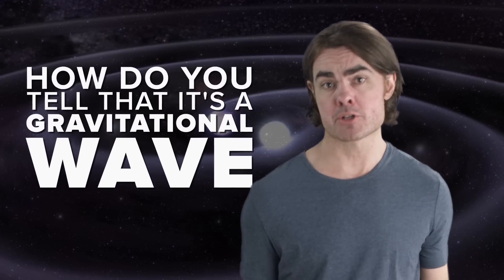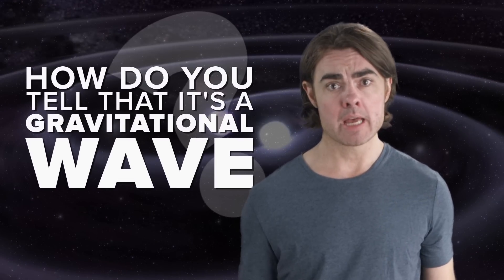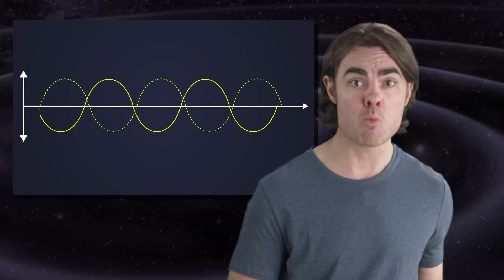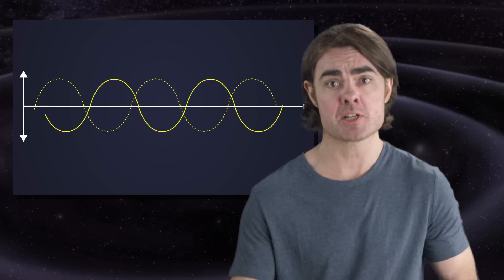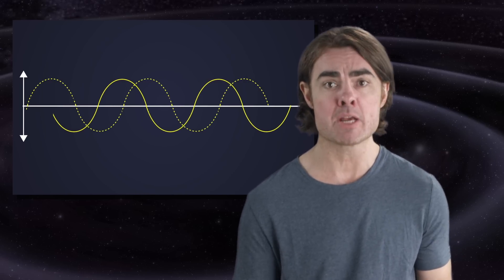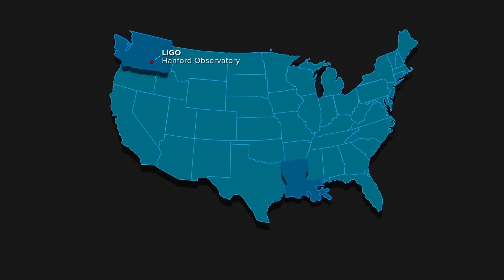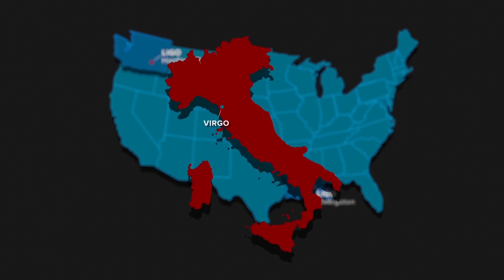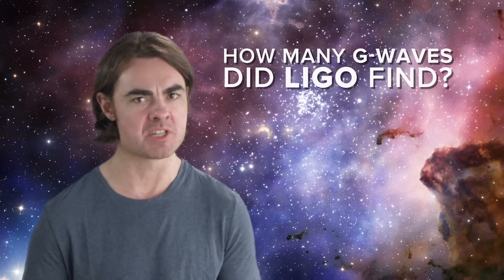So how do we tell that it's a gravitational wave? Well, a G wave leaves a very distinct signature, first contracting one arm while stretching the other, and then oscillating over time. It's even possible to get a direction for the wave by measuring the relative path lengths. But to be extra sure, you want to get the detection in multiple sites. And there are two LIGO sites, one in Washington and one in Louisiana, plus a collaborative facility Virgo in Italy.